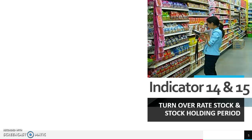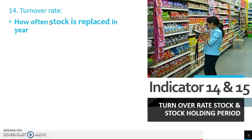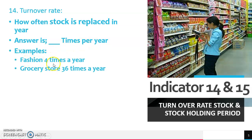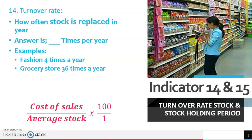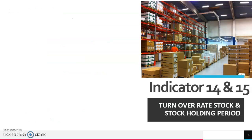Indicators 14 and 15 both relate to stock. Number 14 is the stock turnover rate — how often in 12 months do you sell your stock? The answer is in times per year. For example, fashion items turn over about four times a year due to four seasons, while a grocery store aims for 36 times a year because of perishables. The formula is cost of sales divided by average stock — opening stock plus closing stock divided by two.